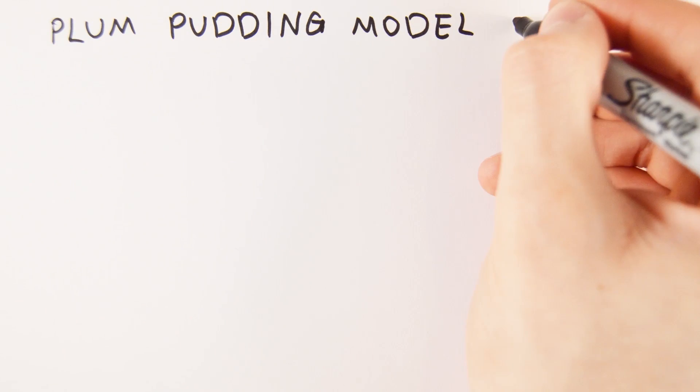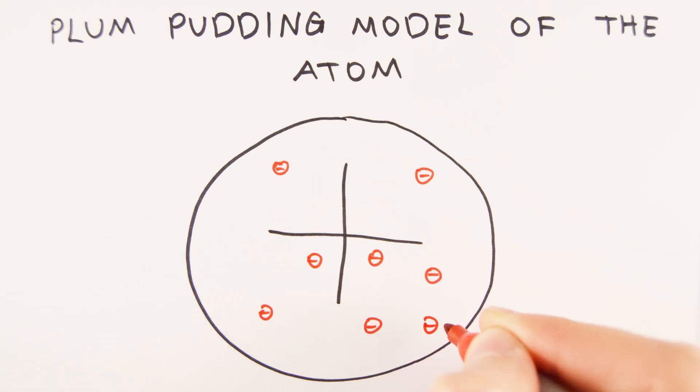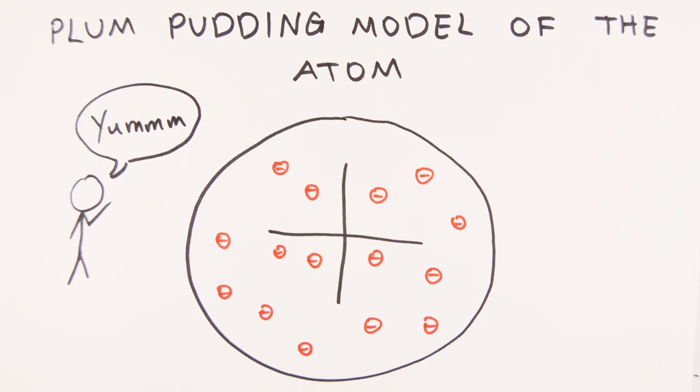An early model of the structure of the atom was called the Plum Pudding Model. In this model, the atom was imagined to be a sphere of positive charge, with negatively charged electrons dotted around inside it, like plums in a pudding.